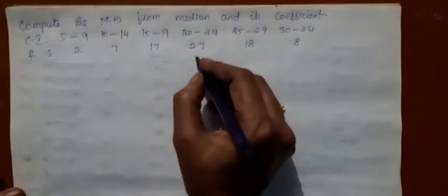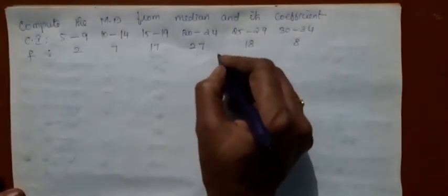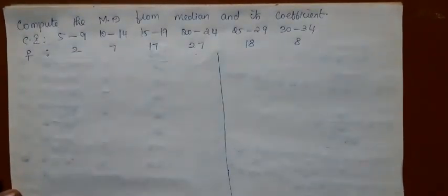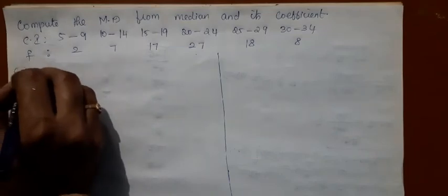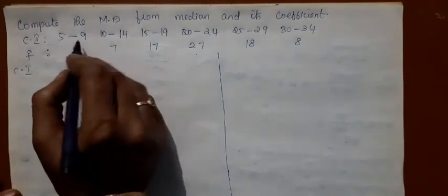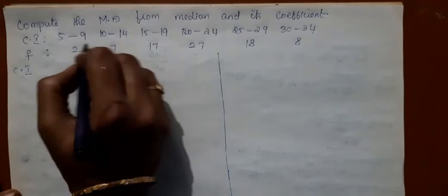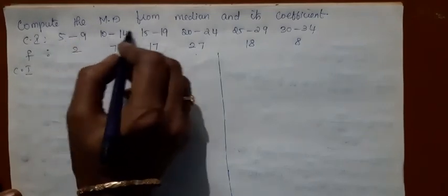When you are computing mean deviation from median, you should compute median. You know median can be computed, the formula for median can be applied only for a series which have exclusive class intervals. But here the class intervals are of inclusive type.